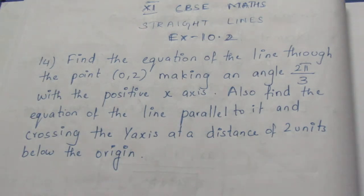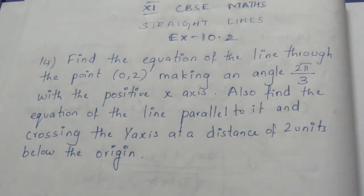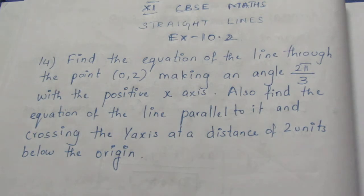Let's see the question. Find the equation of a line passing through (0, 2) making an angle 2π/3 with the positive x-axis. Also find the equation of a line parallel to it and crossing the y-axis at a distance of 2 units below the origin.